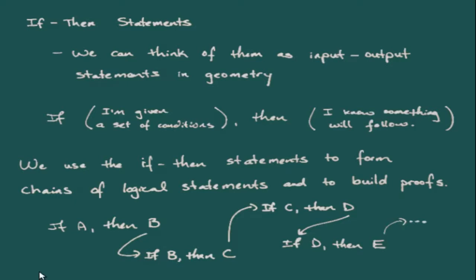We start with an initial input: if-A, then-B, where A is the input and B is the output. That output then becomes the input for the next statement: if-B, then-C. That output becomes the input for the next: if-C, then-D, if-D, then-E, and so on. This is how we use if-then statements to build our chains of logic and put together proofs.